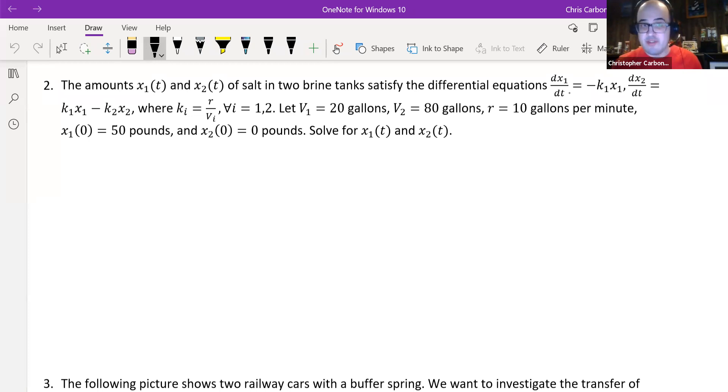We're going to let v₁ be 20 gallons, v₂ be 8 gallons, r be 10 gallons per minute, x₁(0) to be 50 pounds, and x₂(0) to be 0 pounds. We want to solve for x₁(t) and x₂(t).